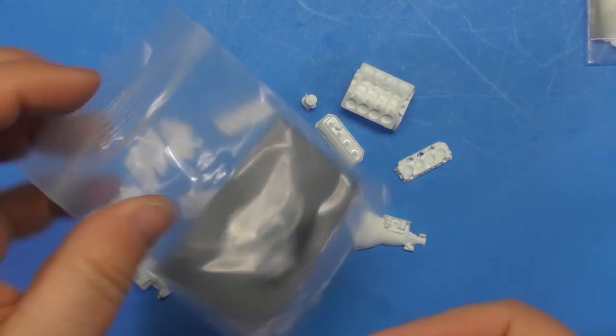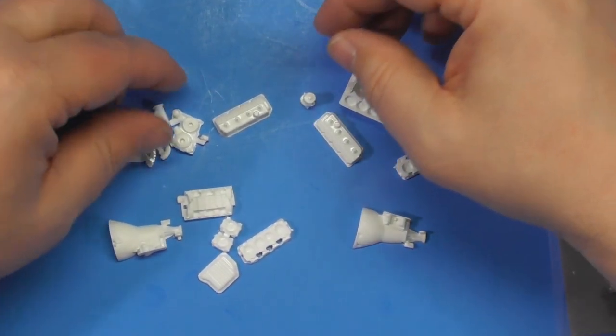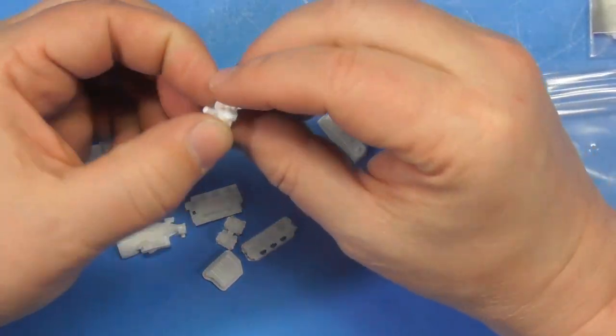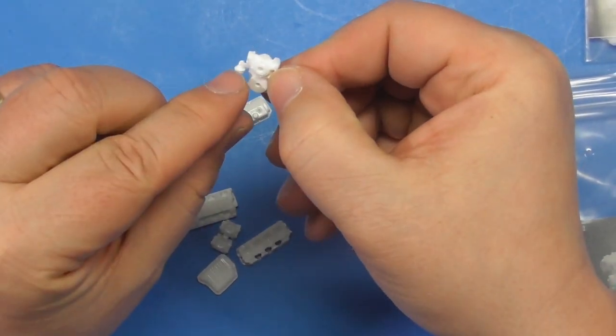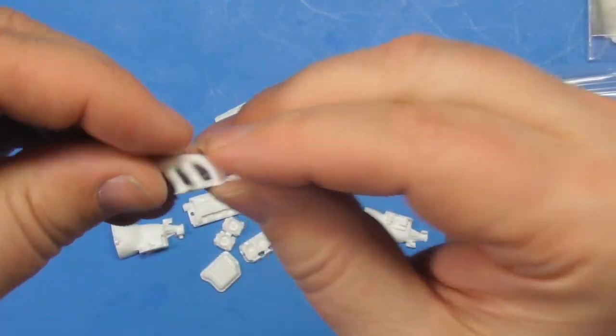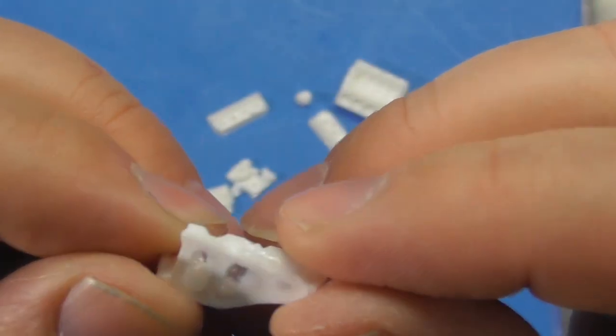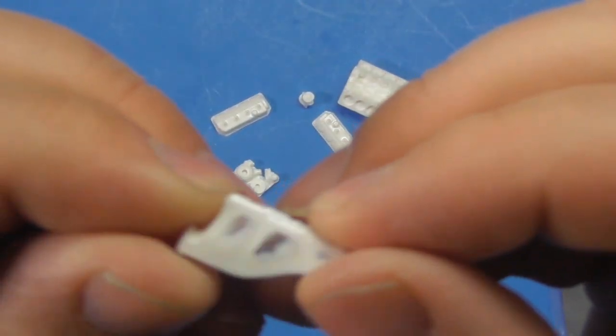There is no instructions. Nope, that's just a card showing the completed engine. Obviously if you're a car builder you know how to put an engine together. Water pump would go like this because that goes down.